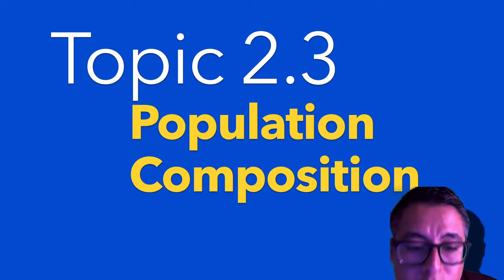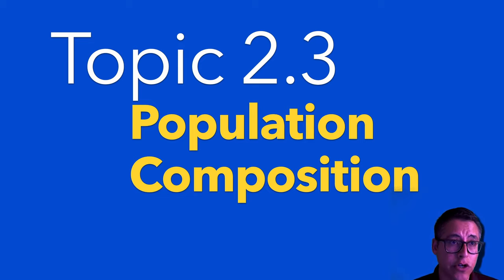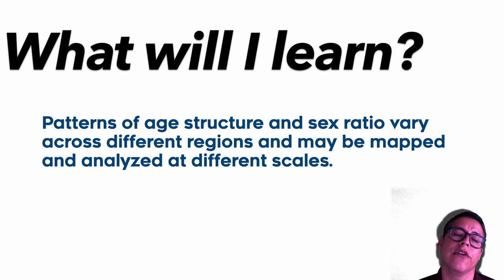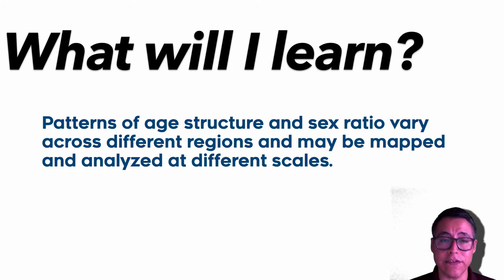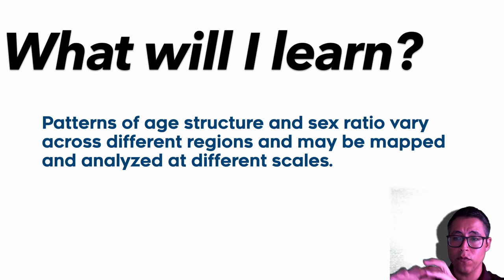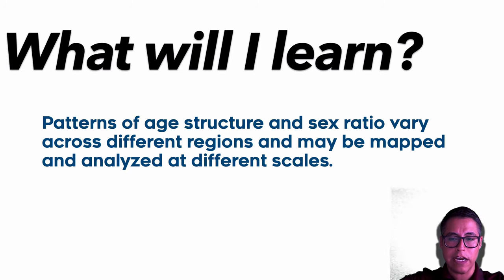Hey everybody, welcome to topic 2.3, population composition. In this lecture, we're going to learn about the ways that the world's population is made up of age structure and sex ratio. We're going to learn about how patterns of age structure and sex ratio vary across the different regions of the world and how they can be mapped and analyzed at different scales.